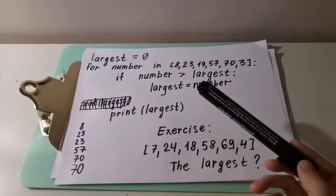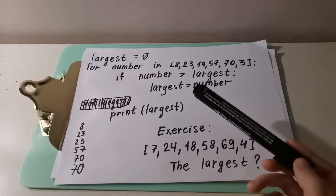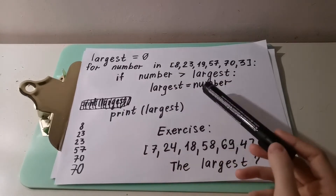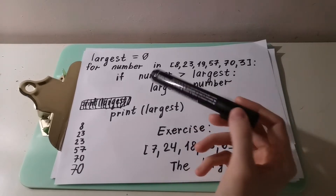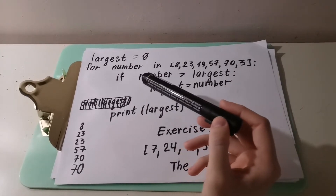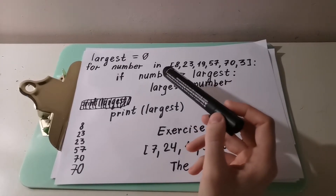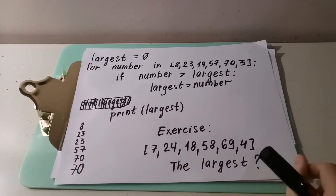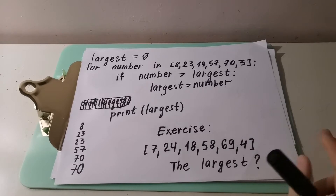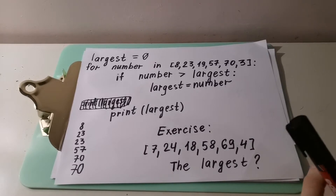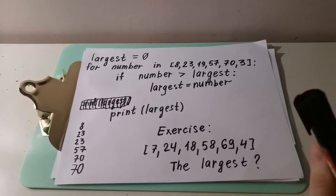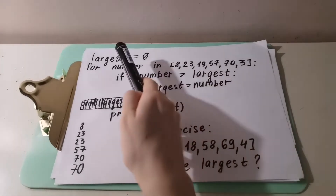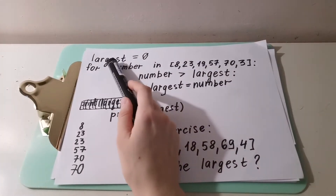Now please try to guess: what should we change in this code if we want to find the smallest number? There are three things we must change. The first thing is not that crucial, but it's good practice — of course we should call the variable not 'largest' but 'smallest'.